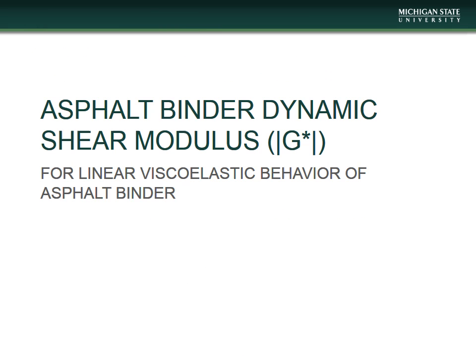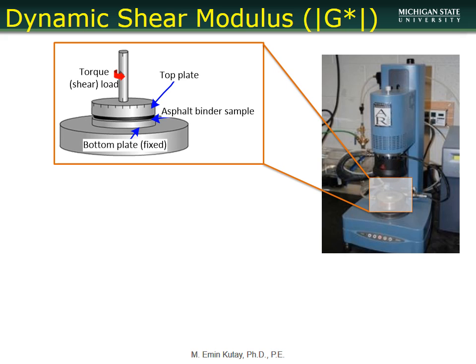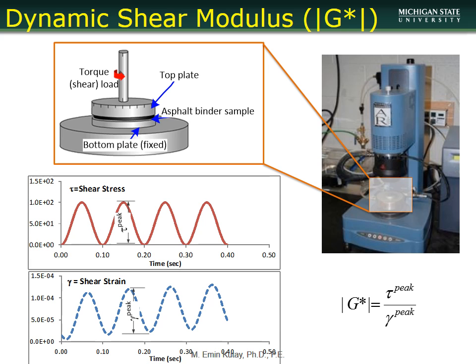Next, the asphalt binder dynamic shear modulus test characterizes the linear viscoelastic behavior of the asphalt binder. It is principally similar to the dynamic modulus test for mixtures. We use a parallel plate geometry: the asphalt binder is placed between two parallel plates, a cyclic torque is applied, and we measure shear strain. Shear stress peak divided by shear strain peak gives G-star, the absolute value of the dynamic shear modulus.